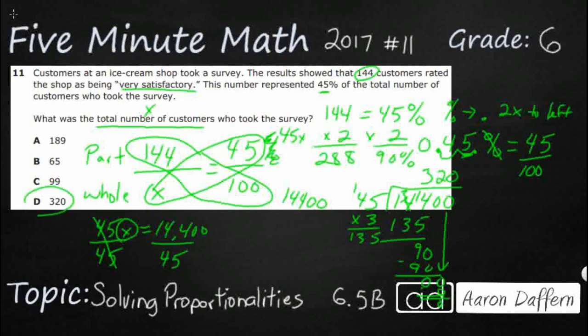If you want, you can multiply that back. You could do 320 times 45. Always a good idea, but guess what you're going to get? 14,400.